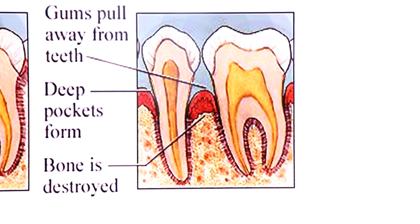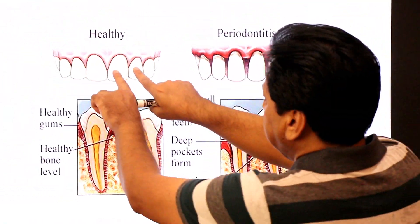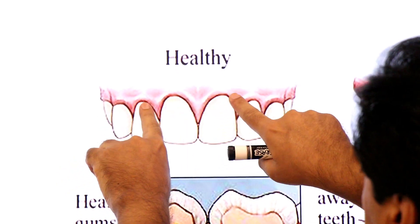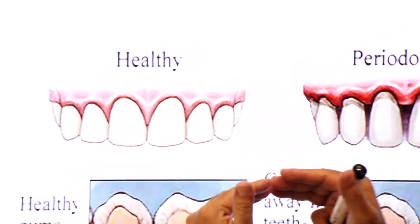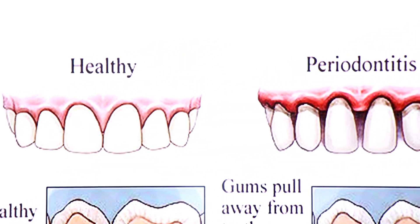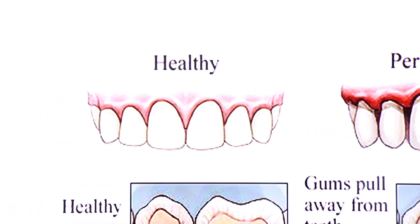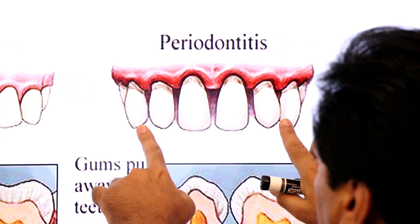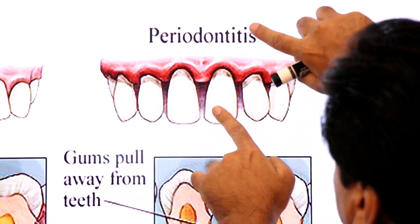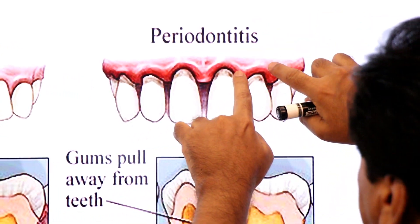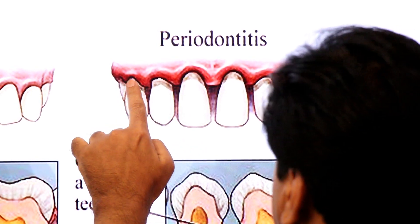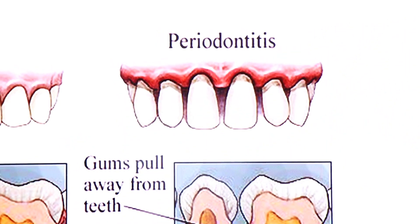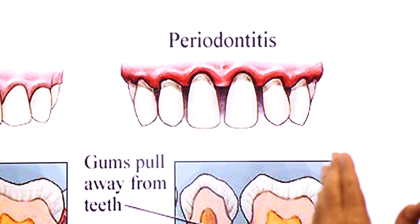Here you see healthy gums with no pockets — healthy gums are tightly bound to the teeth. In disease, the gums are pulled away and spaces known as periodontal pockets are formed, where bacteria cause deep infection.